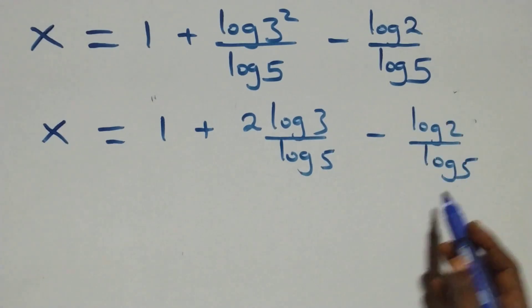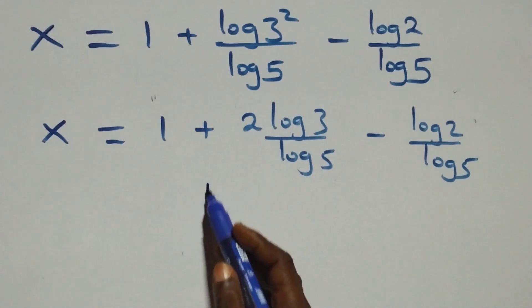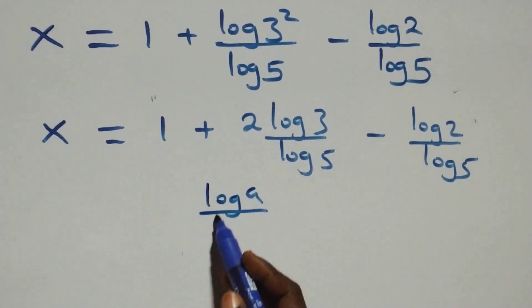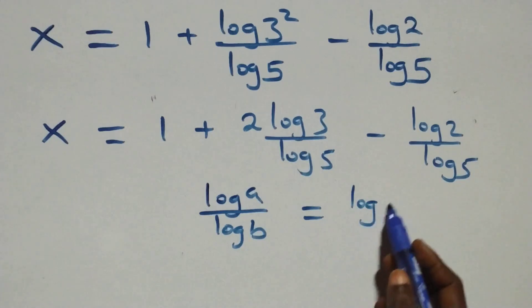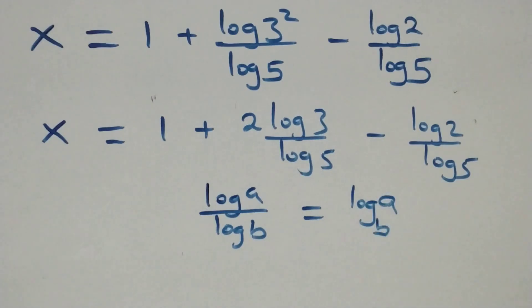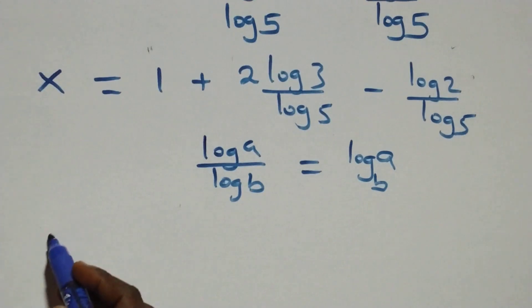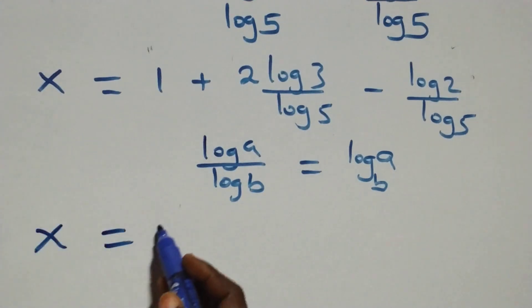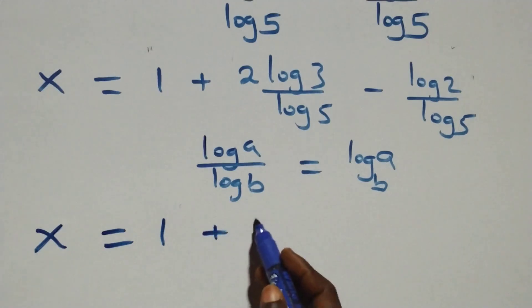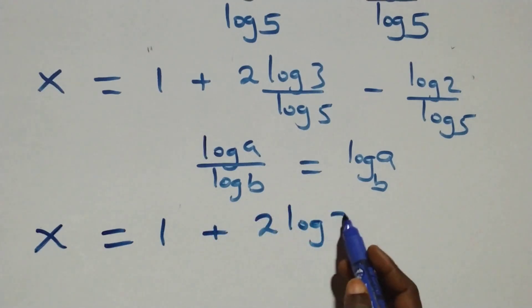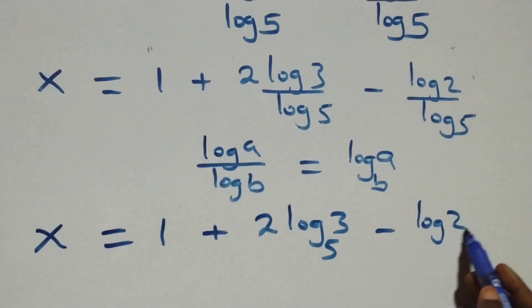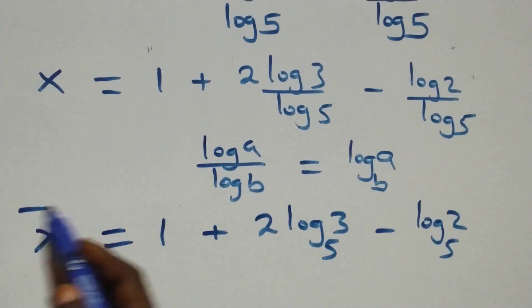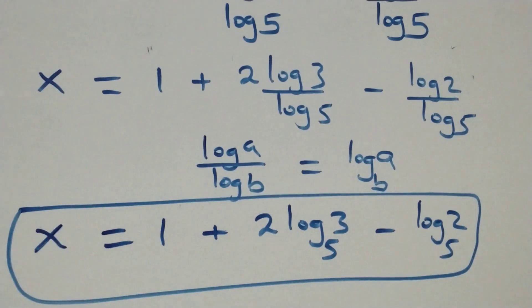We also apply the change of base rule: log a over log b is the same thing as log a to base b. So what we have becomes x equals to 1 plus 2 log 3 over log 5, minus log 2 over log 5. This is the value of x: one plus two log three over log five, minus log two over log five.